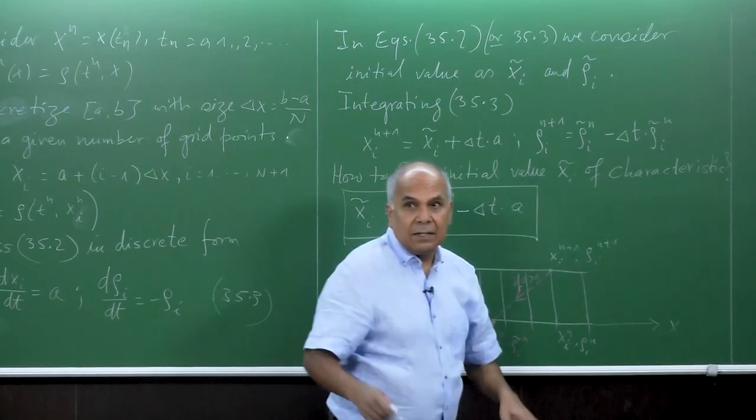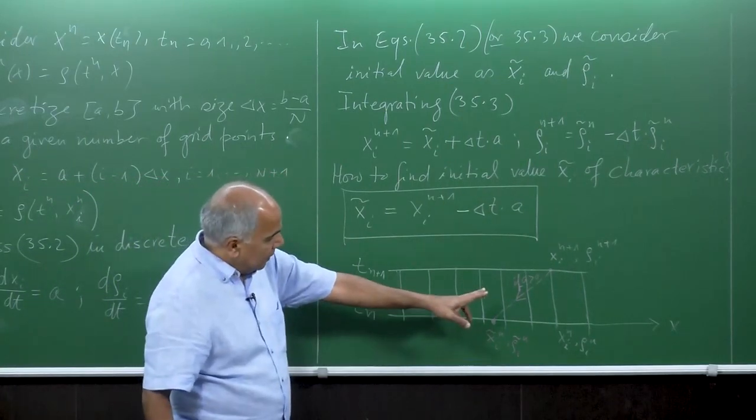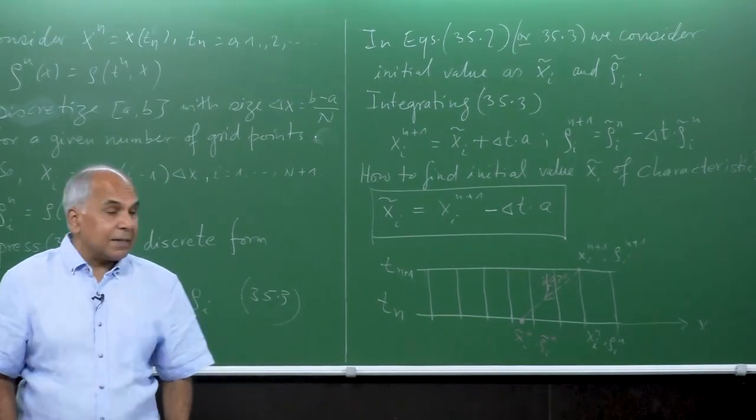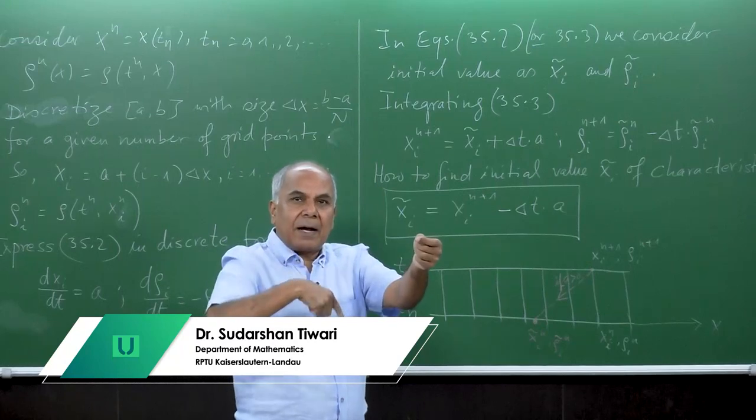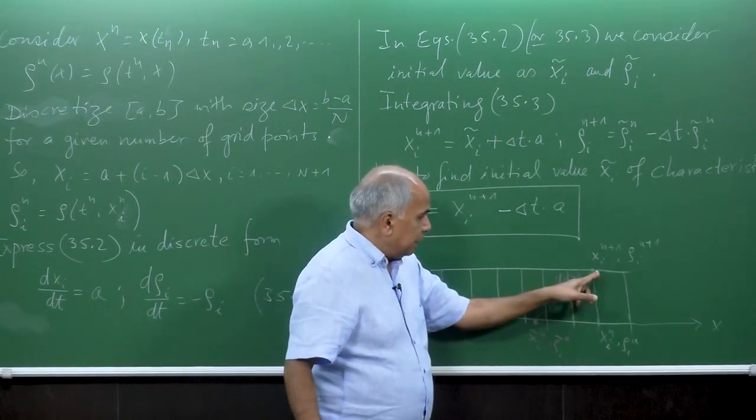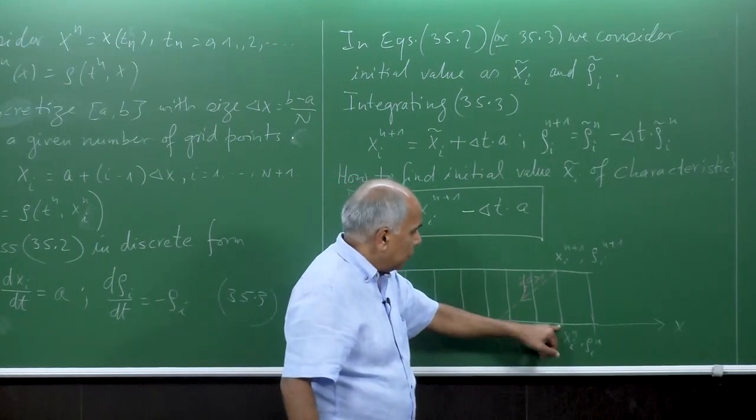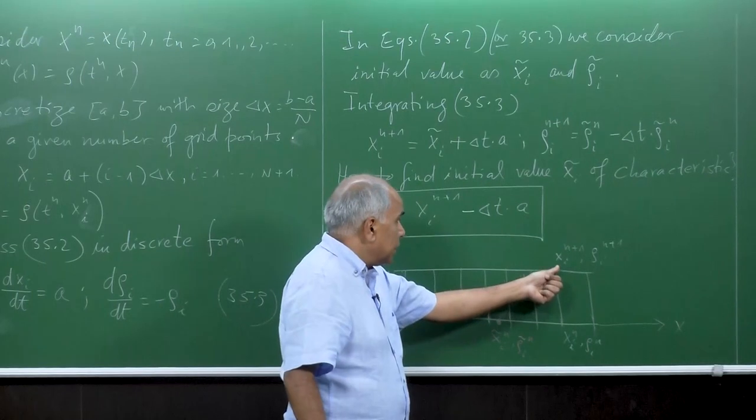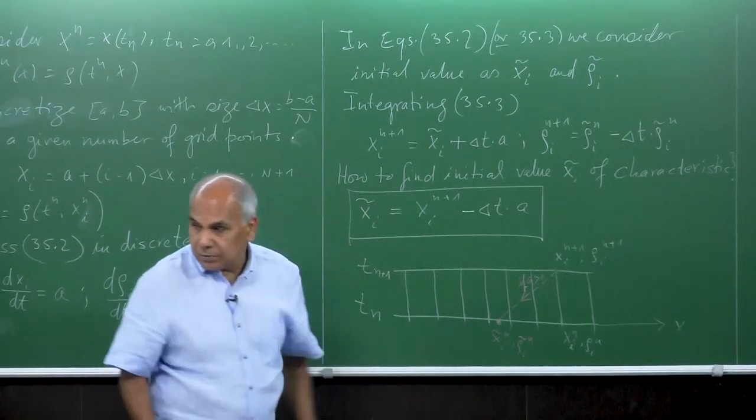So what do we see here? It looks like the particle reconstruction method. In particle reconstruction method also we move and then interpolate the value back. But here that time we had just put the value back, but here we do not know where the characteristics falls. If it falls exactly here, we are just putting exactly back here.